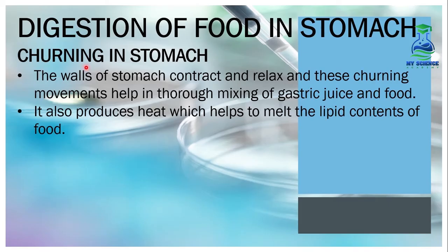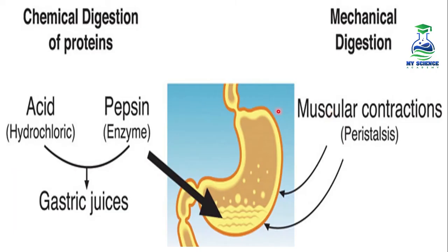Next is churning in the stomach. The walls of the stomach contract and relax, and these churning movements help in the thorough mixing of gastric juice and food. Along with chemical digestion, the stomach also helps in the mechanical digestion of food.